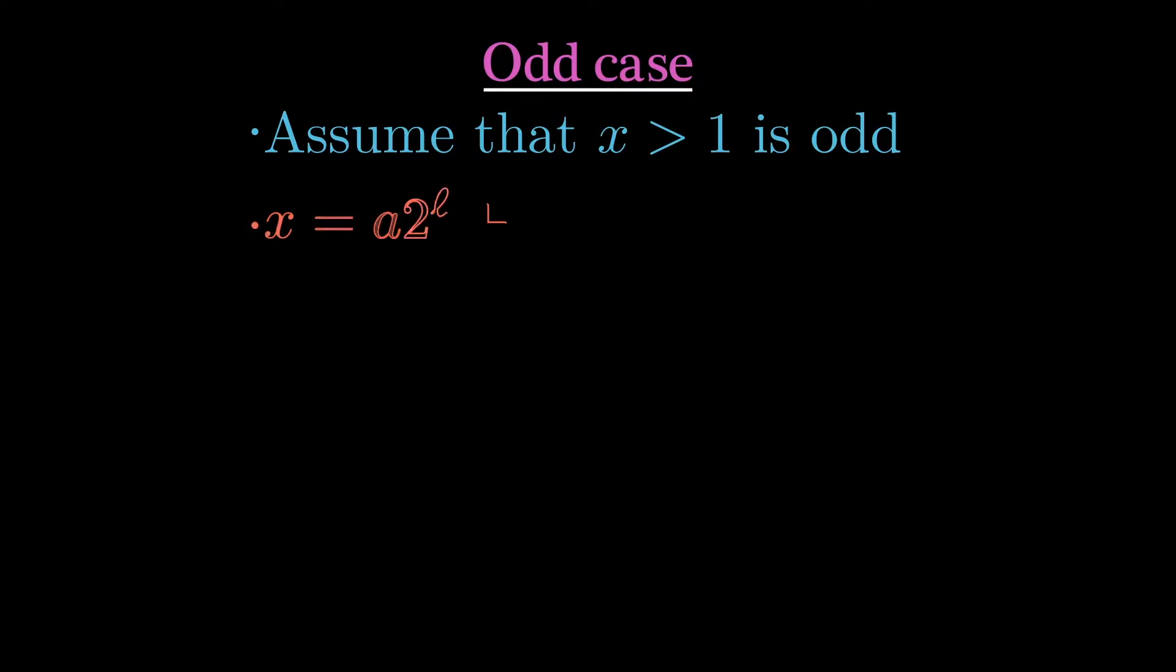Therefore x minus 1 is divisible by 2, so just pull out the maximum number of powers of 2. Therefore, x equals 1 modulo 2 to the l for some positive l.